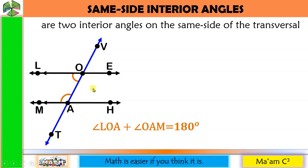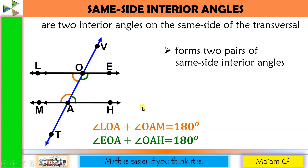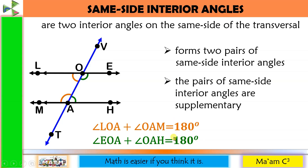Let's get another pair, this time from the right side. Angle EOA and angle OAH are same-side interior angles, and when you add their measurements, it is also equal to 180 degrees. So parallel lines cut by a transversal form two pairs of same-side interior angles, and these two pairs of same-side interior angles are supplementary because when you add their measurements, it equals 180 degrees.